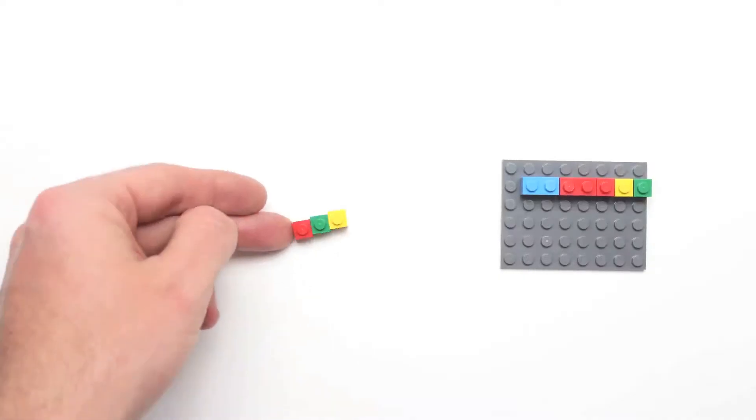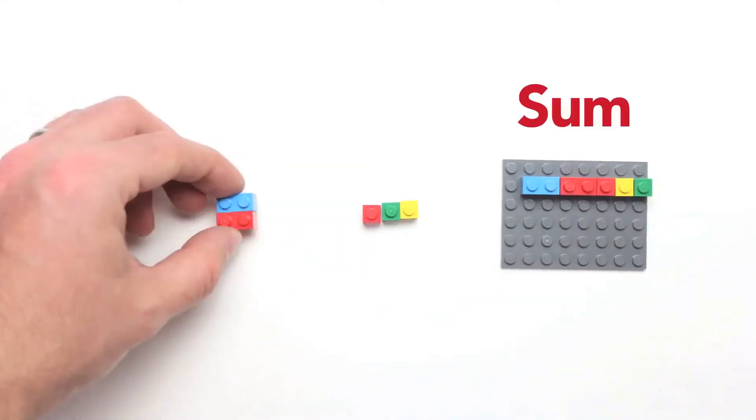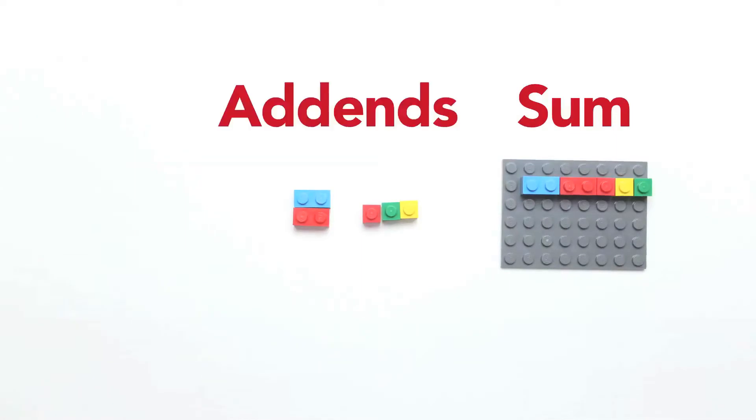Explain that set three represents the sum in the problem, and that sets one and two represent the addends.